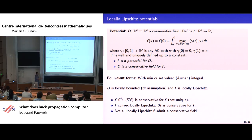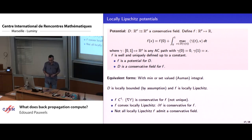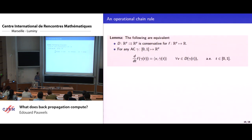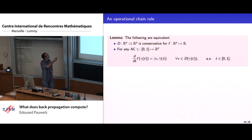If f is convex and locally Lipschitz, then its subdifferential is also a conservative field for f — a result from convex analysis. Importantly, we don't have conservative fields for all locally Lipschitz functions; the set of locally Lipschitz functions which do not have a conservative field is in fact generic in a certain sense. This restricts the class of functions we consider. There is also an equivalent characterization through the chain rule.